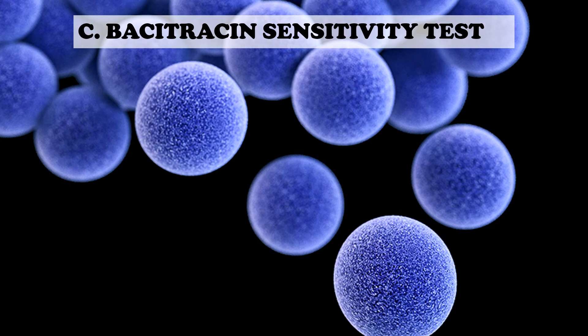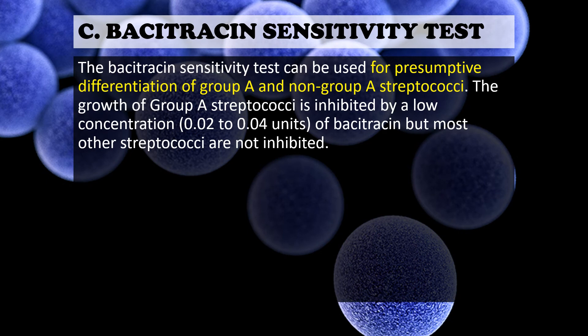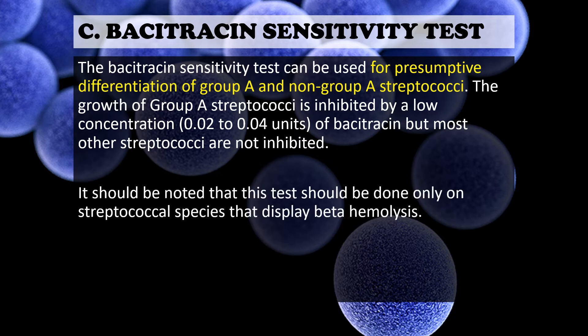Next, we have the bacitracin sensitivity test. The bacitracin sensitivity test can be used for presumptive differentiation of group A and non-group A streptococci. The growth of group A streptococci is inhibited by a low concentration, ranging from 0.02 to 0.04 units of bacitracin, but most other streptococci are not inhibited. A zone of inhibition of any size around the bacitracin disc indicates sensitivity, and therefore a positive test. No zone of inhibition is considered negative. If a red ring can be seen around the disc, this is also considered a positive test. It should be noted that this test is to be used only for streptococcal species that display beta hemolysis.